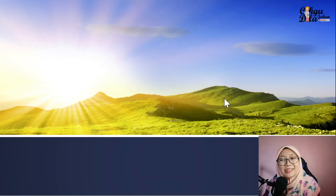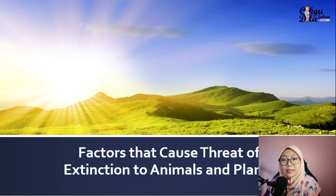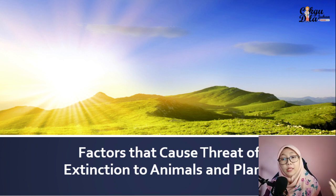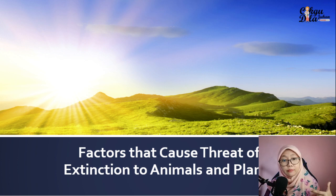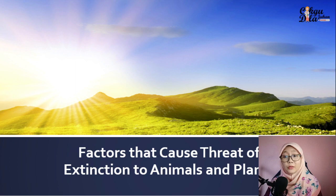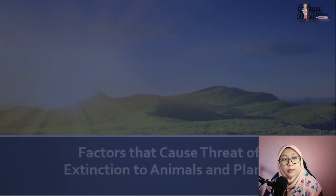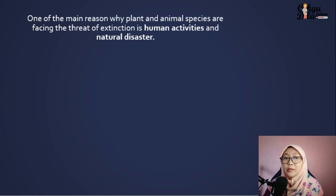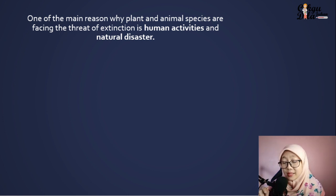In this video we will learn about the factors that cause threat of extinction to animals and plants. In my previous video I explained about animals that are already extinct and some other animals and plants facing the threat of extinction. One of the main reasons why plant and animal species are facing the threat of extinction is because of human activities and also natural disasters.